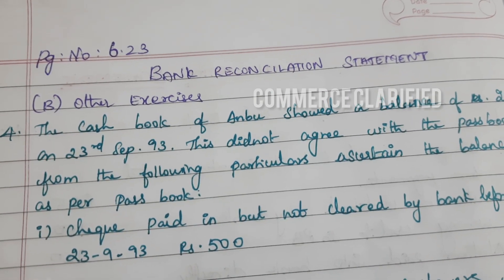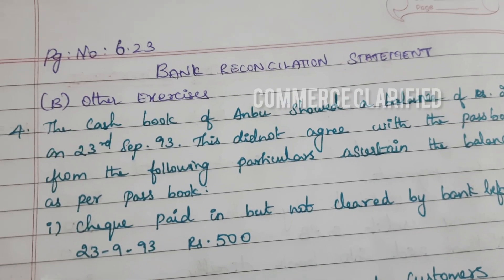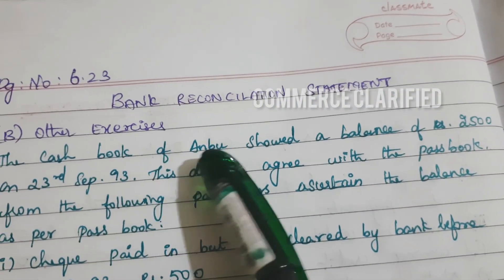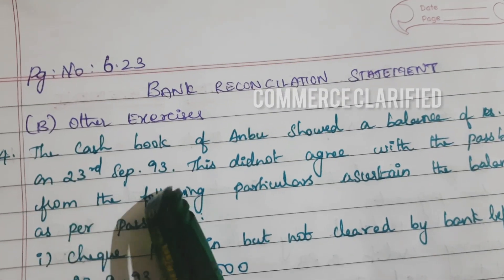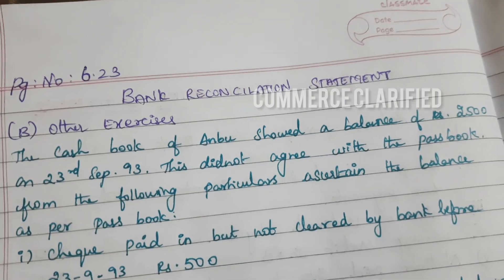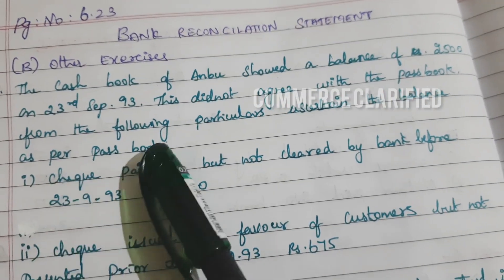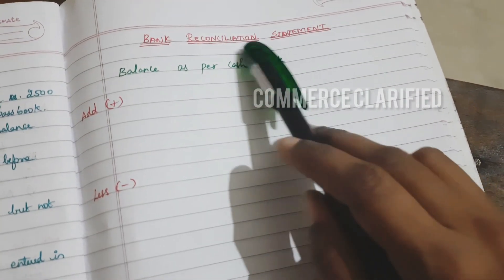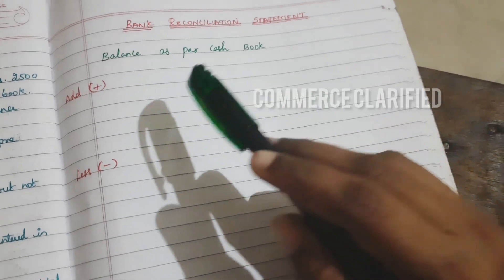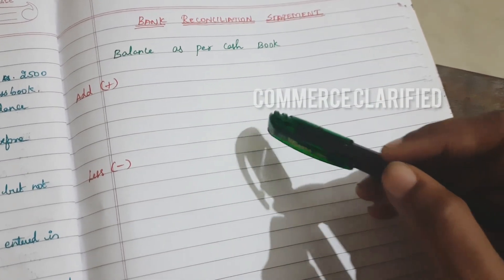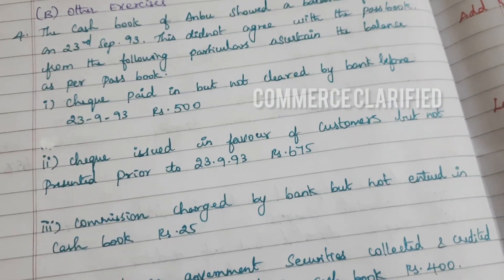Hi, hello, welcome to Commerce Clarified, page number 6.23, Bank Reconciliation Statement — other exercise, problem number four. The cash book of Anbu showed a balance of rupees 2500, a favorable balance, on 23rd September 1993. This did not agree with the pass book. So following reasons we have to find out the pass book balance as per cash book. In the format video we have already shown what to add or minus.